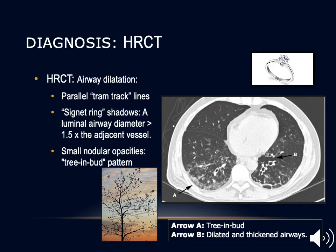CT scan is more sensitive for diagnosing bronchiectasis. The characteristic findings — signet ring shadows, tram-track lines, or small nodular opacities in a tree-in-bud pattern — can only be seen on high-resolution CT chest. Signet ring shadow is defined as a luminal airway diameter more than 1.5 times the adjacent blood vessel, resembling a diamond ring.